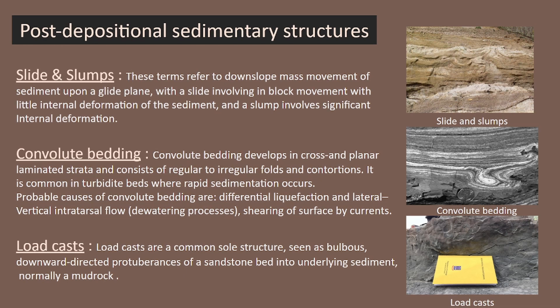Here you can see convoluted bedding. Convolute bedding develops in cross and planar laminated strata and is common in turbidite beds where rapid sedimentation occurs. The probable causes of convoluted bedding are differential liquefaction, lateral and vertical interstitial flow, and shearing of the surface by currents.